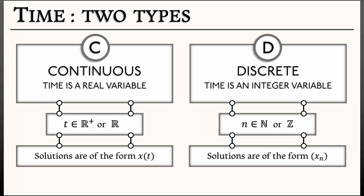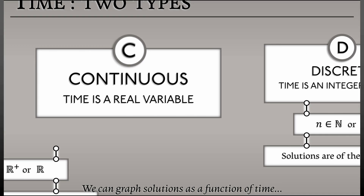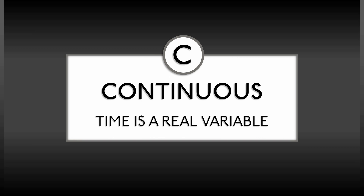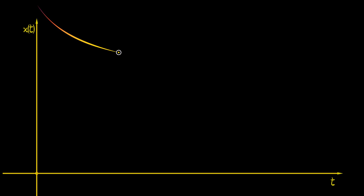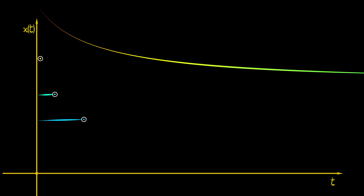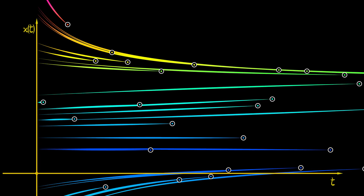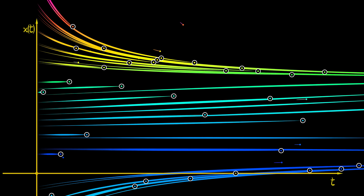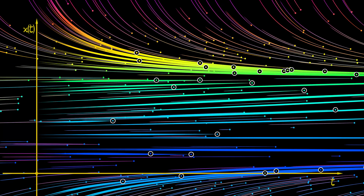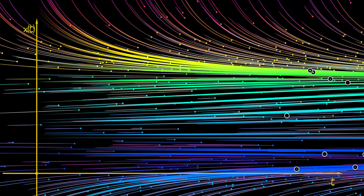Our first approach is one that we've seen before, where we simply graph these as functions of time. Starting with the continuous case, we graph t along the horizontal axis and x along the vertical axis. You can see an individual solution tracing out a curve over time. If you plot all of the solutions — or a large number of them, since there are infinitely many — they fill out the tx plane and give a very nice description of what's going on.